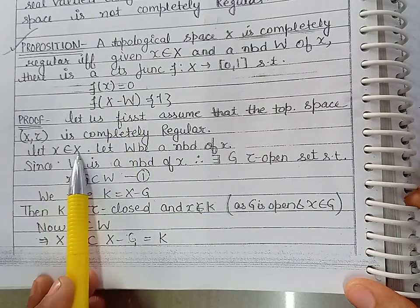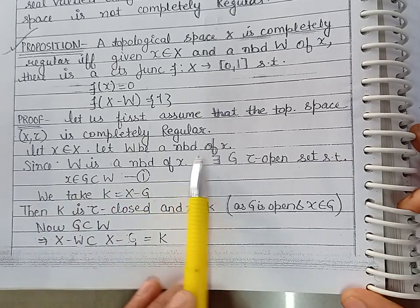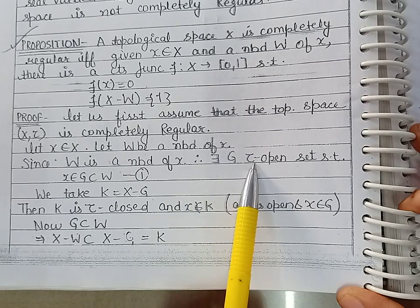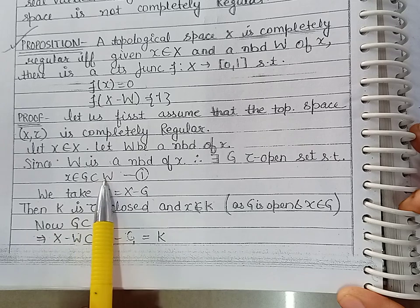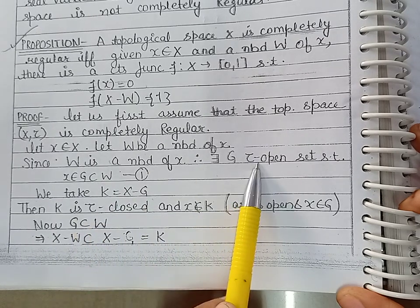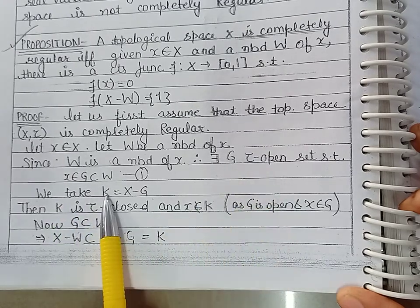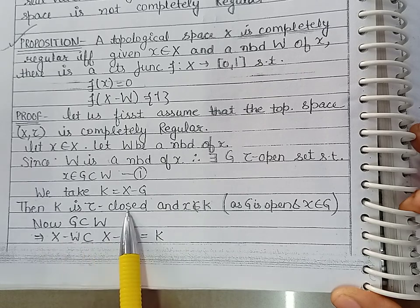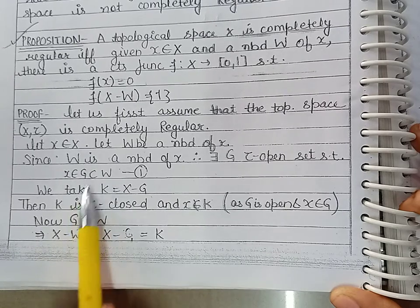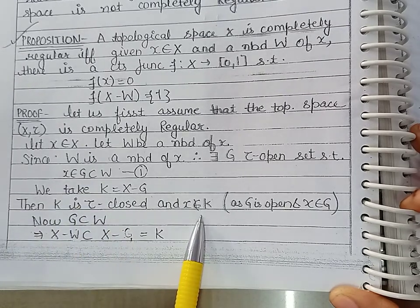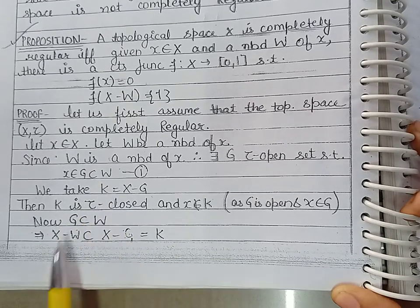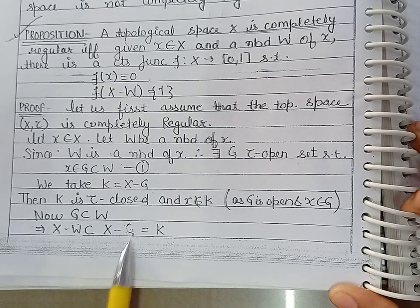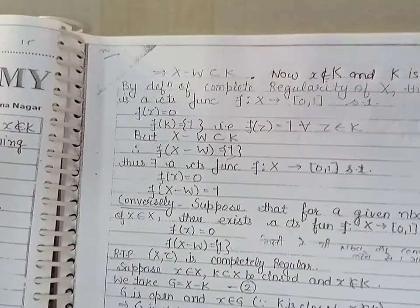Let x belong to X and let W be a neighborhood of x. By definition of neighborhood, there exists an open set G in tau such that x ∈ G ⊆ W. Since G is open, its complement K = X \ G is closed. Because x belongs to G, x does not belong to K. From G ⊆ W, taking complements gives X \ W ⊆ X \ G = K, so X \ W is contained in K.